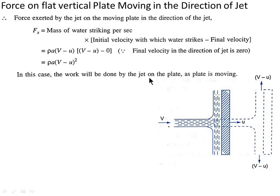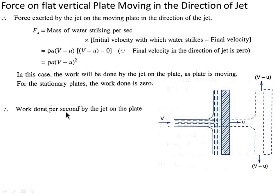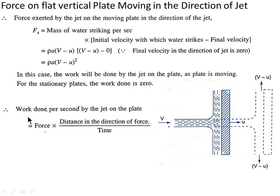In this case, work will be done by the jet on the plate as the plate is moving. Whereas for a stationary plate the work done is zero. Work done per second by the jet on the plate equals force into distance in the direction of force divided by time — that is Fx into U, since distance divided by time is the velocity of the plate. So work done equals rho A (V minus U)² multiplied by U.